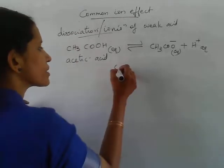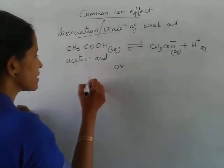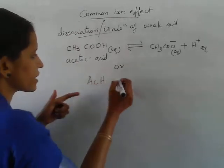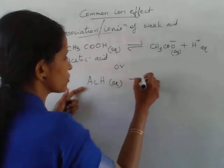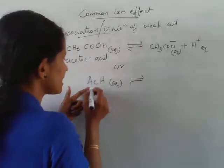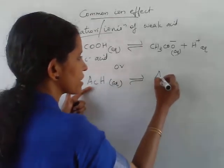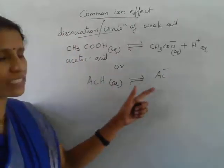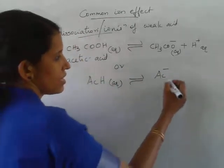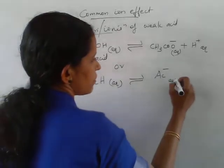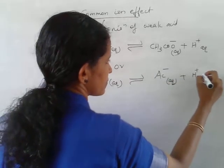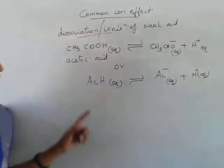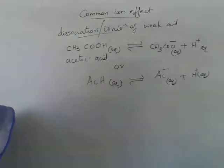Acetic acid can also be written as ACH. So this equilibrium can also be written as ACH dissociating to give acetate ion, written as AC minus, plus H plus ion. Both equations mean the same.